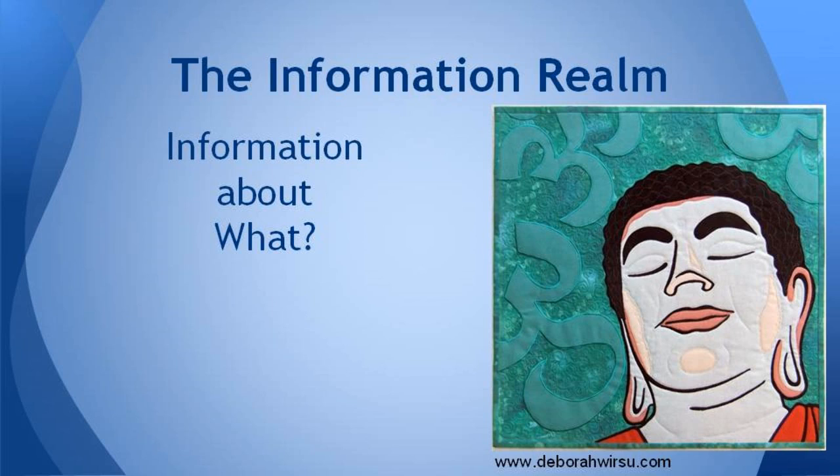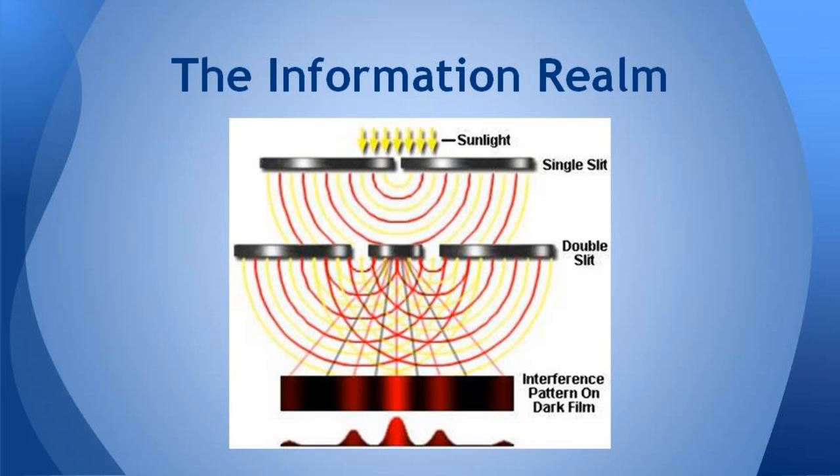So the information realm is information about what? Well, it's information about possibilities. And just as in quantum mechanics, exactly as in quantum mechanics, we have possibilities of superpositions. That's exactly what the information realm is showing, is containing all the possibilities that quantum mechanics conveys for us.